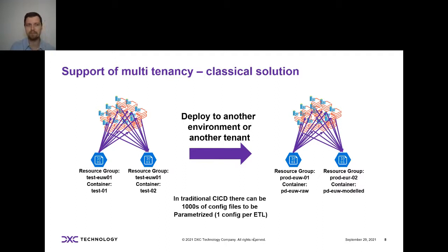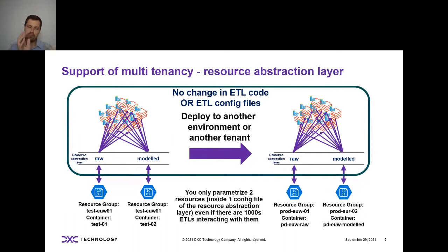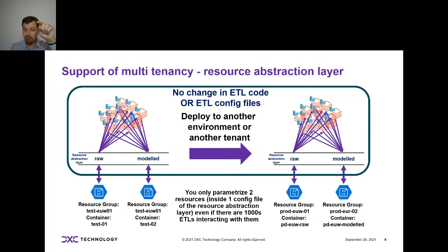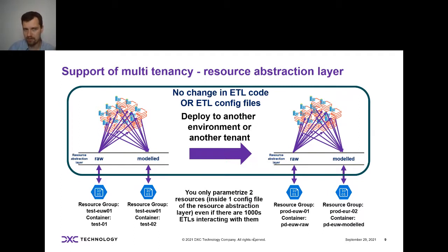You might think that's the gold standard — it's actually not. That was the gold standard 15 years ago. Think about it: you have 1,000 ETLs and you have to parametrize 1,000 config files, but actually only two resources changed. There's a better way — that's the resource abstraction layer. You build your 1,000 ETLs with config files that point to an alias location: 'I'll be taking from raw and putting to modeled.' Underneath, you have a component that says 'raw is actually test-eu-west-01' and maps it dynamically on the fly.